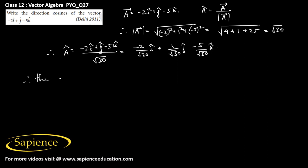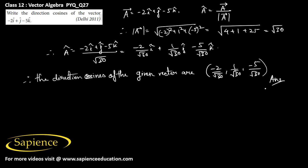So therefore, the direction cosines of the given vector are -2 by root 30, 1 by root 30, and -5 by root 30. So this is the final answer. Thank you.